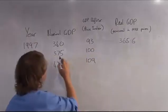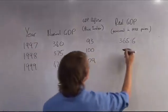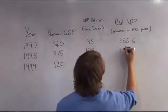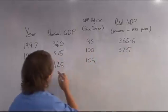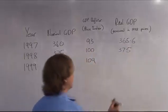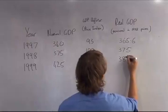Then you do the same: 375 divided by 100 is 375. And then 425 divided by 109 is 389.9.